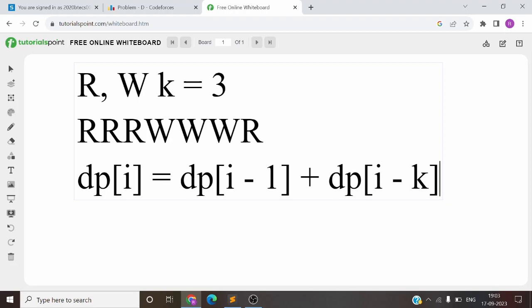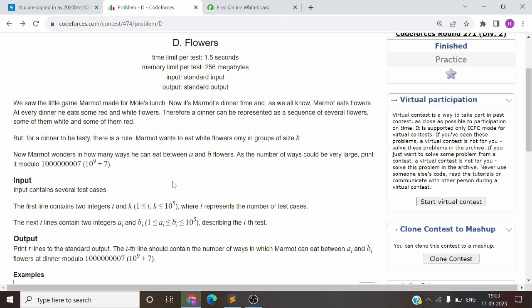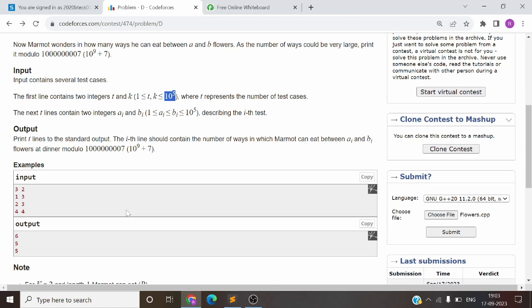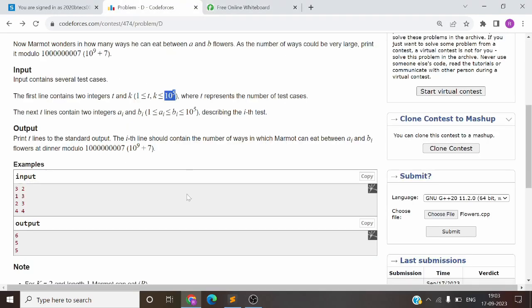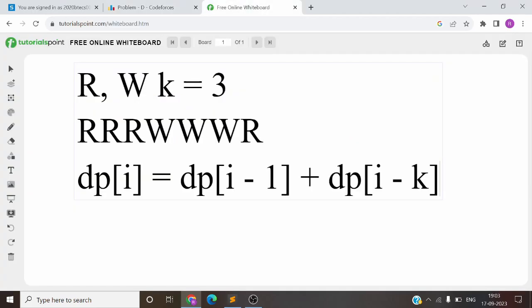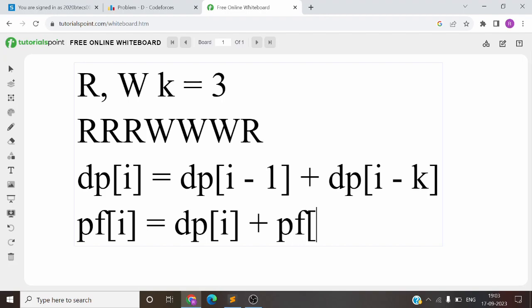Now when a state is defined, we need to calculate the DP. We can calculate the value 10^5. So how do we calculate it? We have to precompute it. Then we have to make the prefix sum. So the prefix variable will be DP of i plus prefix of i-1. So we will make a prefix of DP and the final answer is prefix of b minus prefix of a minus 1.